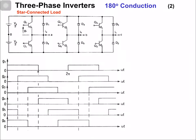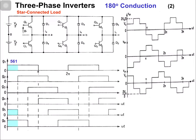You can see at any instant of time three switches are in the on state, and once the switch is turned on it remains on for 180 degrees, which means the duty cycle of the gating waveform is 50%. There are six pulses which are generated and each pulse is delayed by 60 degrees to get six gating pulse waveforms. Now let's discuss the voltage waveforms which are generated because of these gate pulses.